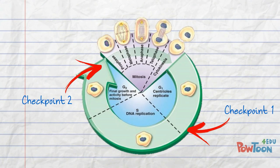Checkpoint two at the end of G2 checks the success of DNA replication, and checkpoint three, seen in metaphase, assesses whether all the chromosomes are aligned correctly.